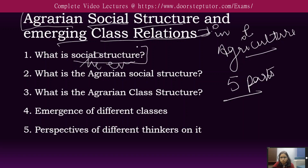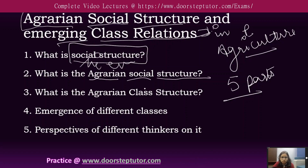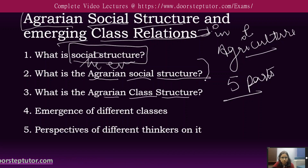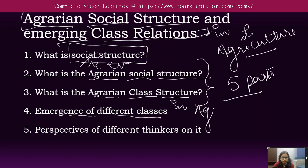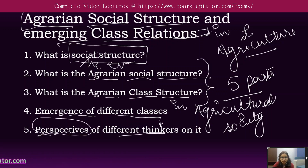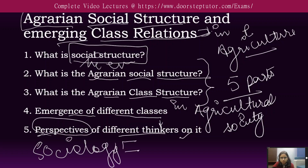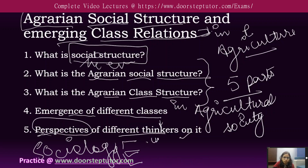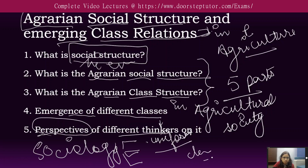First, we will understand what is social structure, then we will understand what is the agrarian social structure and what is agrarian class structure — both of these have a very little difference. Then we will understand the emergence of different classes in agricultural society with different time phases and in different forms. To understand all these things, we will see the perspectives of different sociologists and thinkers, because Indian society is so diverse that we cannot apply one uniform principle to understand the whole system of classes in agriculture. We have to apply different principles as per different geographical regions and different cultural practices followed by different classes.